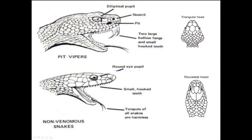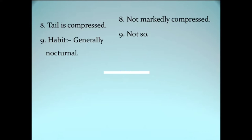You can see two large hollow fangs in poisonous snakes, and also a pit. In vipers, the pupil is most commonly slit-like or elliptical, and you see small head scales. In non-poisonous snakes you see a rounded pupil and large head scales with evenly sized teeth. The tongue in both non-poisonous and poisonous snakes has nothing to do with poison — it is harmless. It is the fangs that cause poisoning.